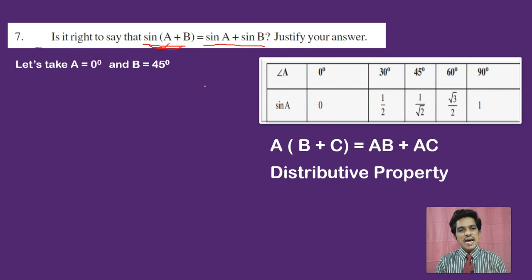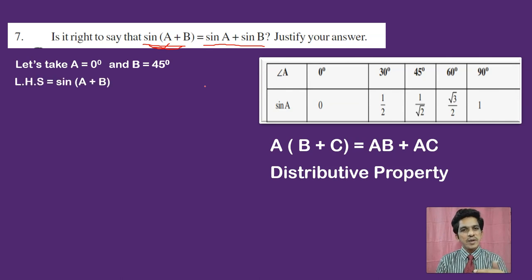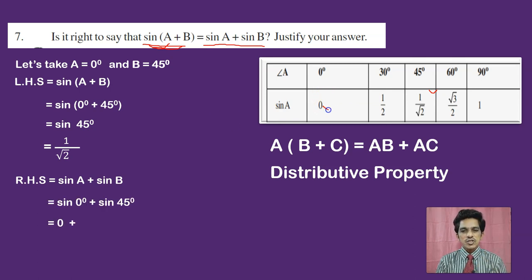Let me take A = 0 degrees and B = 45 degrees. Left-hand side: sin(0 + 45) = sin 45 = 1 by root 2. Right-hand side: sin 0 + sin 45 = 0 + 1 by root 2 = 1 by root 2. In this case both sides are equal.